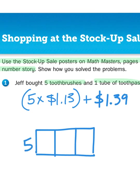So I'm going to use the partitioned rectangle strategy of multiplication. I'm going to multiply everything by five. So $1.13 would be one whole plus one tenth plus three hundredths.